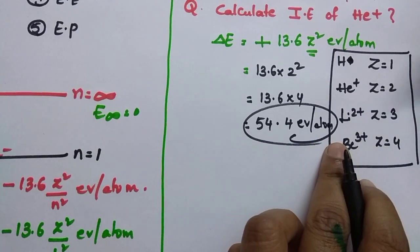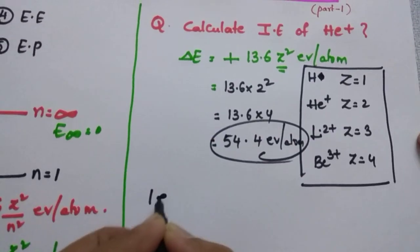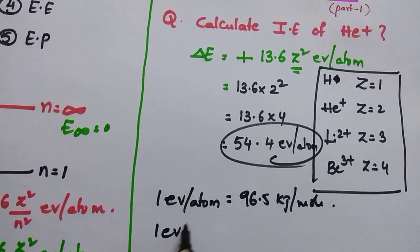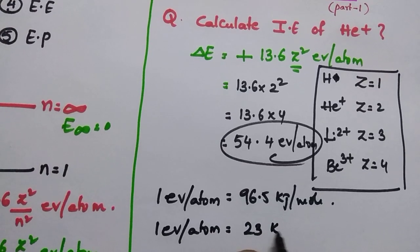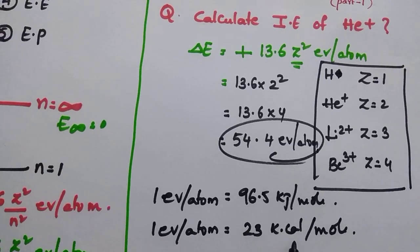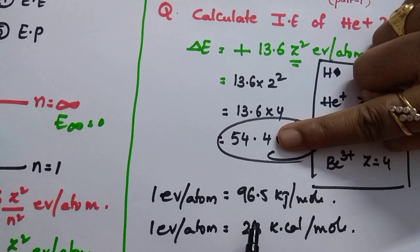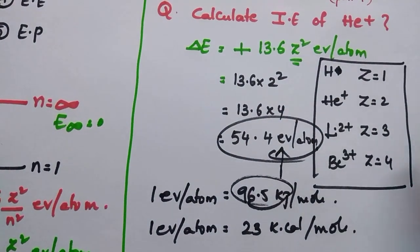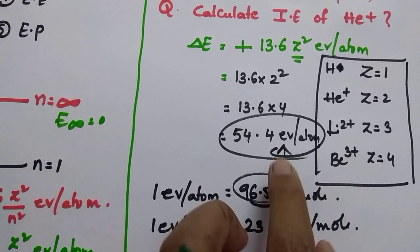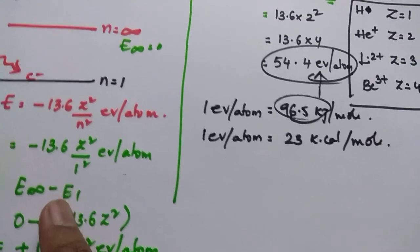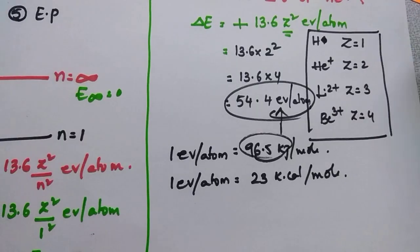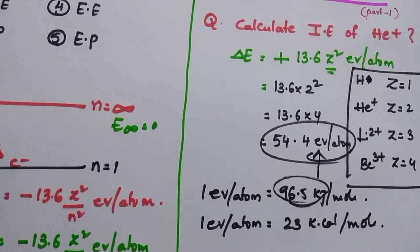Suppose instead of electron volt per atom the units are different: 1 electron volt per atom equals 96.5 kilojoule per mole, or 1 electron volt per atom equals 23 kilocalorie per mole. If your options are in kilojoule per mole, just multiply 54.4 by 96.5 to get your answer in kilojoule per mole. If you want kilocalories, multiply by 23. Keep this formula in mind and it will be easy. Atomic structure formula derivations will be discussed in the next video along with more tricks.